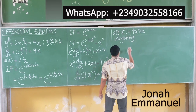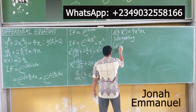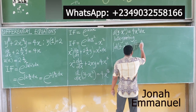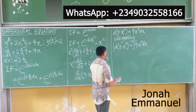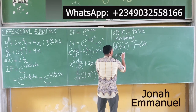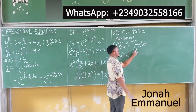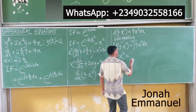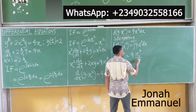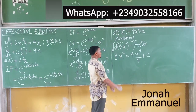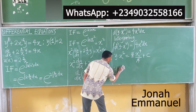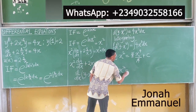Integrating both sides: the integral of d(y·x²) equals the integral of 4x³ dx. The integral cancels the differential on the left, giving y·x². On the right, using the general power rule: 4x^(3+1) / (3+1) = 4x⁴/4 = x⁴. So y·x² = x⁴ + C.